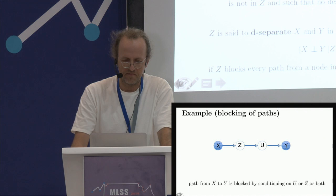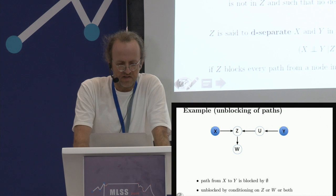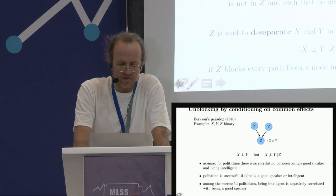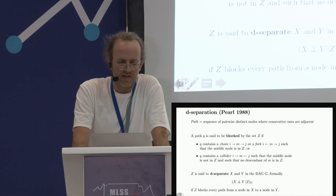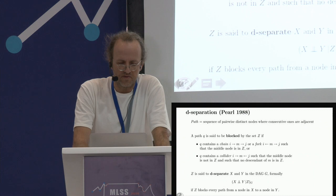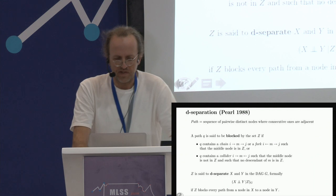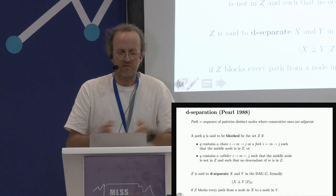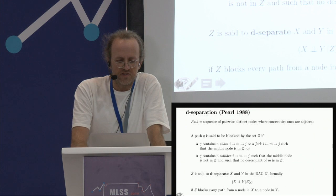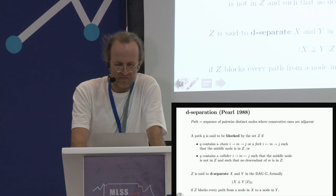The second way a path can be blocked is more subtle. If the path only contains chains or forks, you just check whether any node along the way is in the conditioning set. It gets trickier when a path contains a collider — an element in between that is caused from both left and right. In this case, for blocking to work, we want the middle node NOT to be in the conditioning set, and also no descendant of the middle node should be in the conditioning set.